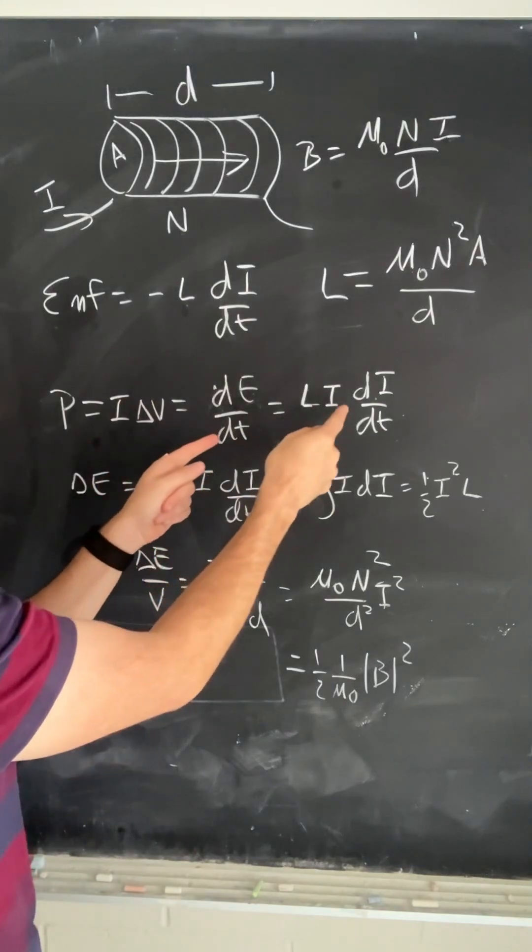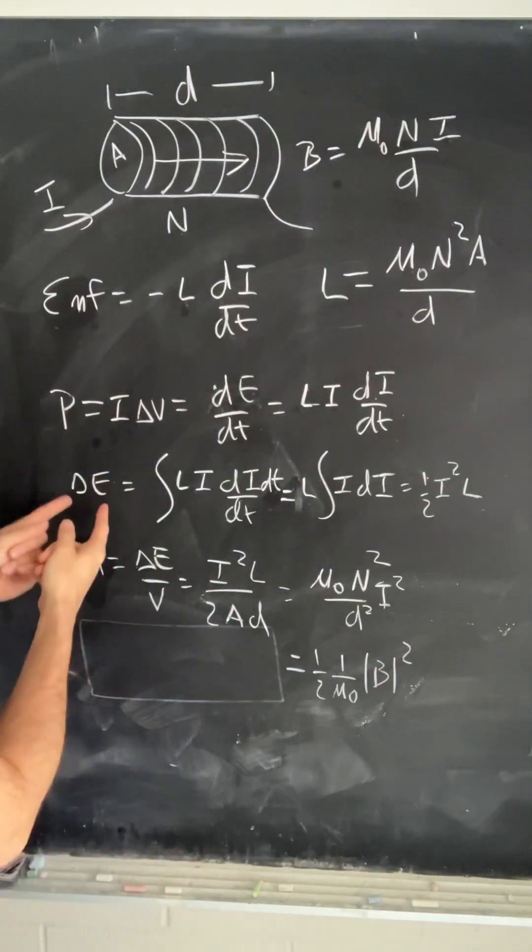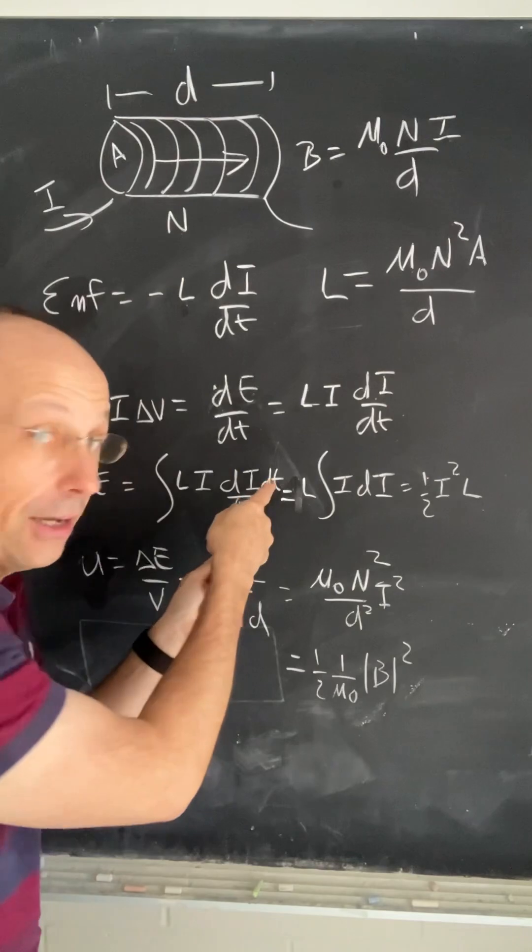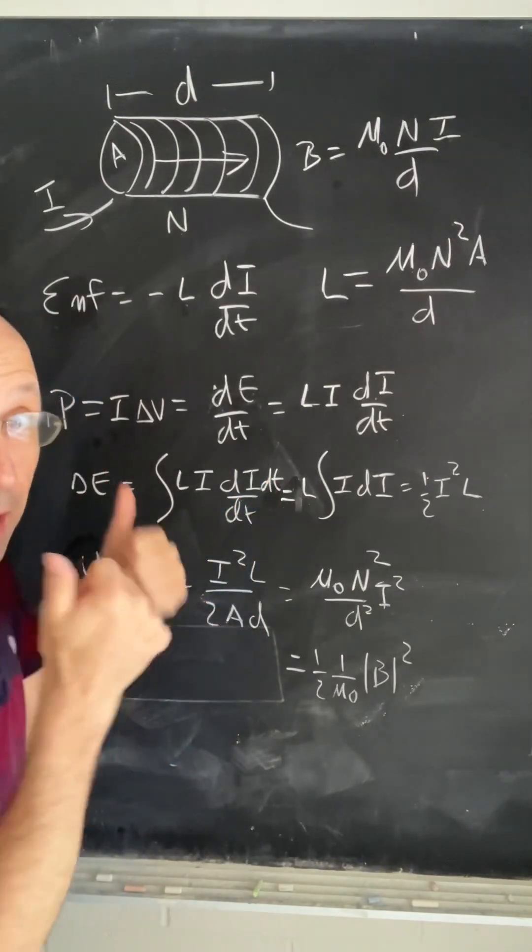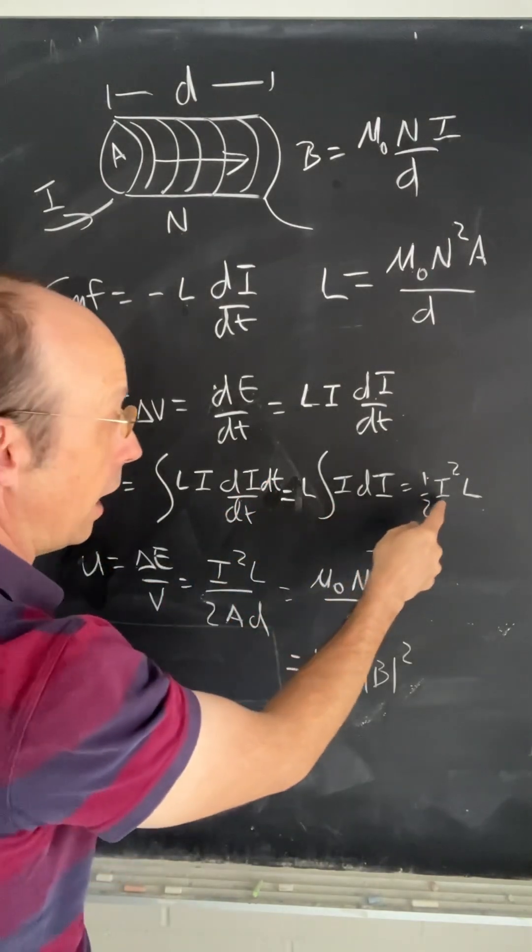Now I can multiply both sides by dt and integrate both sides. I get the change in energy. The delta, the dt's cancel, and I can integrate and I get one half IL squared.